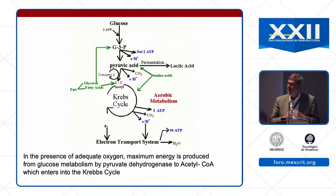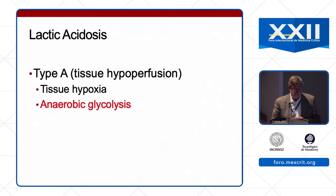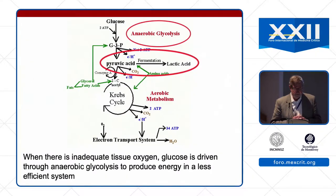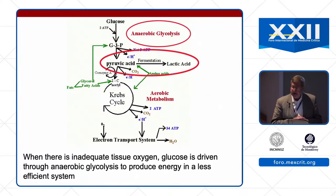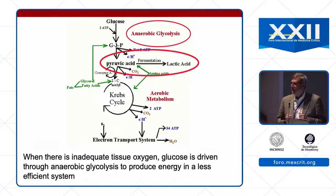When we talk about aerobic metabolism, we're talking about aerobic glycolysis and the conversion of glucose through channels that drive energy. When we talk about lactic acidosis type A and tissue hypoxia, we're talking about anaerobic glycolysis. When there is inadequate tissue oxygen, glucose is driven through anaerobic glycolysis via the Embden-Meyerhof pathway, where pyruvate is converted to lactate, producing a little bit of energy — not a lot, but better than none.